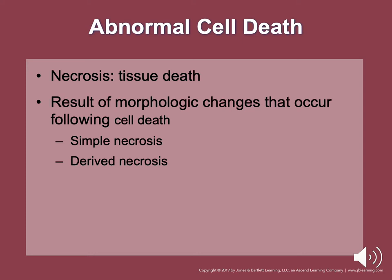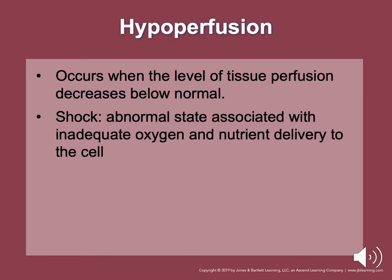Hypoperfusion occurs when the level of tissue perfusion decreases below normal. Shock is the abnormal state associated with inadequate oxygen and nutrient delivery to the cells. In response, the body releases catecholamines — epinephrine or norepinephrine — which produce increased strength of cardiac contraction, increased pulse rate, vasoconstriction, and increased systemic vascular resistance.